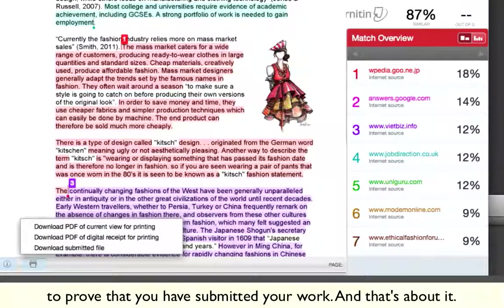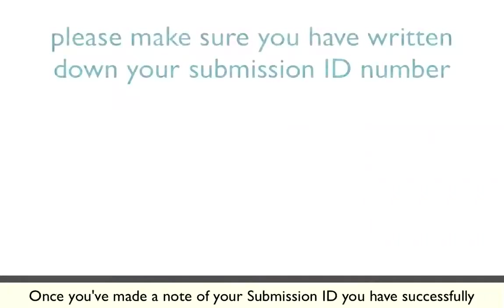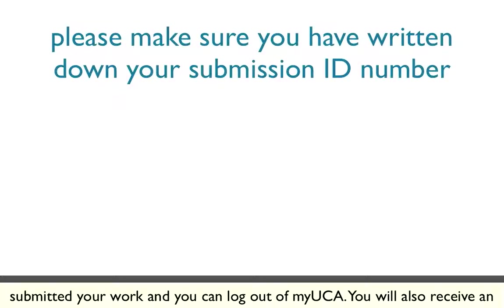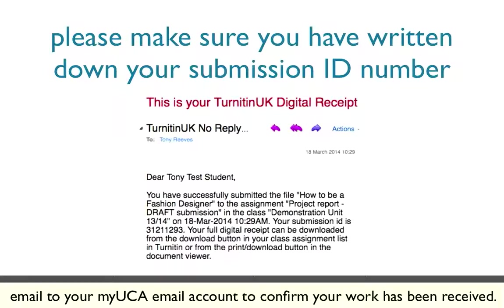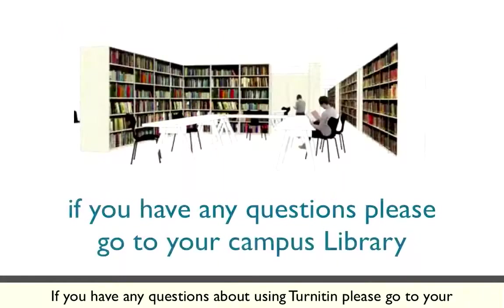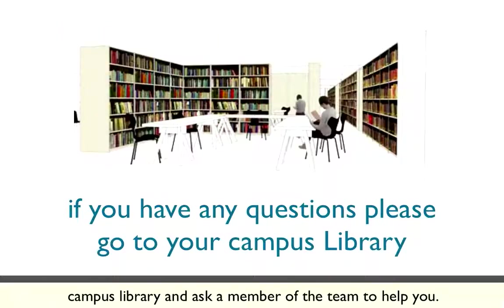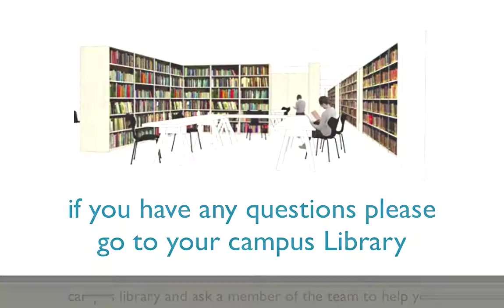Once you've made a note of your submission ID, you have successfully submitted your work and you can log out of MyUCA. You will also receive an email to your MyUCA email account to confirm that your work has been received. If you have any questions about using Turnitin, please go to your campus library and ask a member of the team to help you.